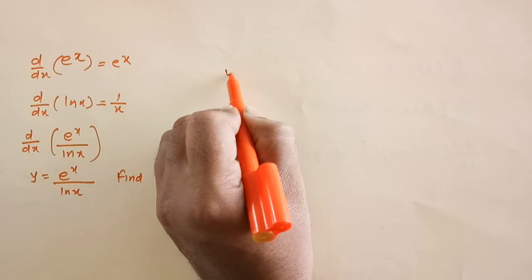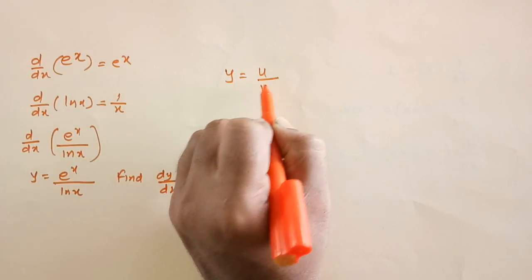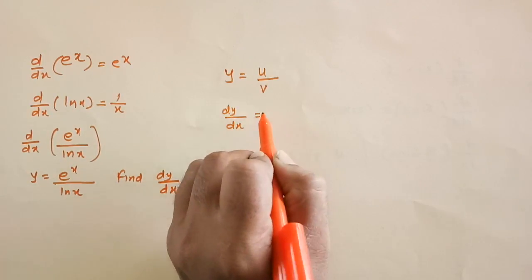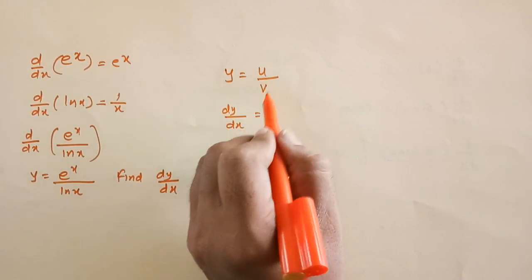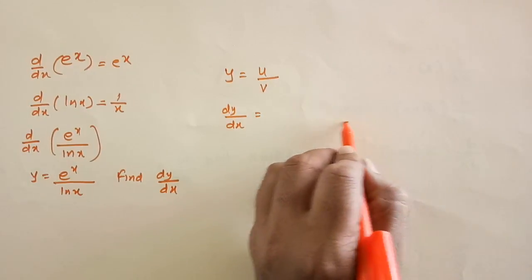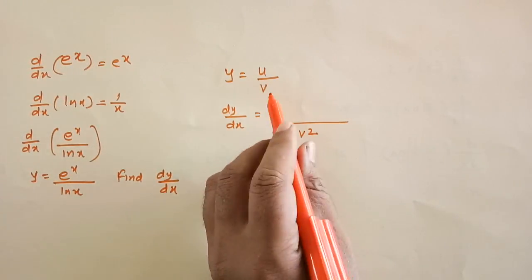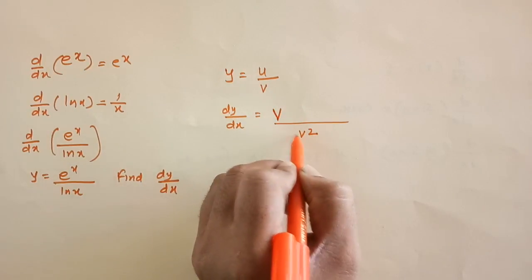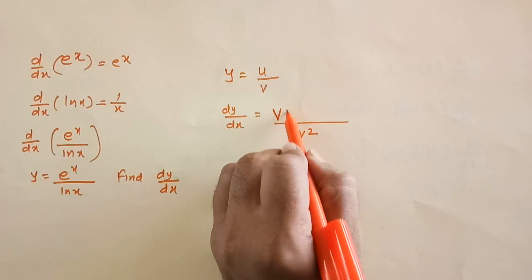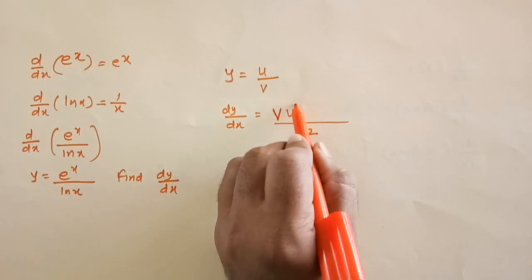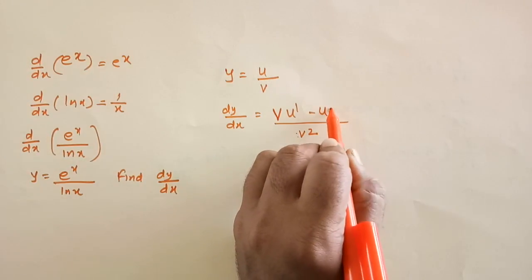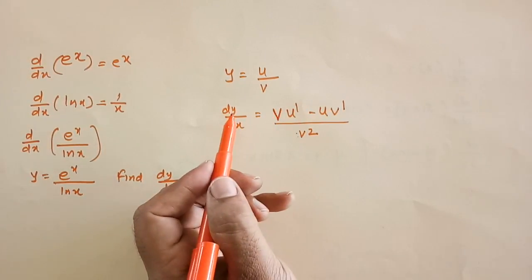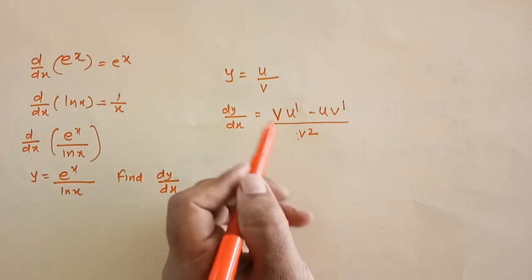If you have y equals u over v, where u and v are functions of x, then dy/dx equals v squared in the denominator, and in the numerator: v as it is times u dash, minus u as it is times v dash. The order matters — if you change the order your answer will be wrong. So remember: the denominator is v squared, and the numerator uses v.